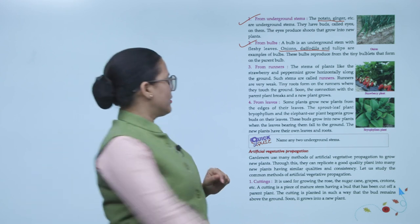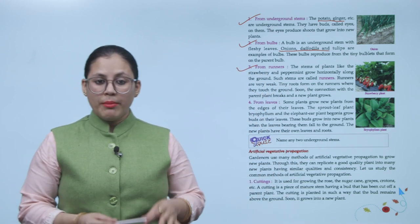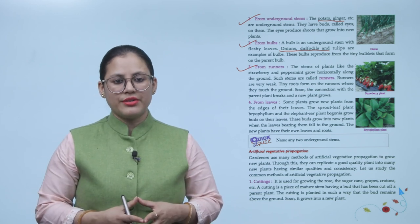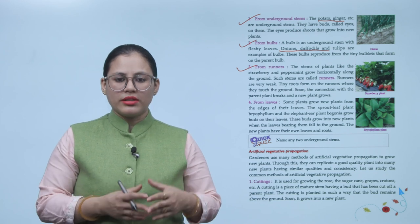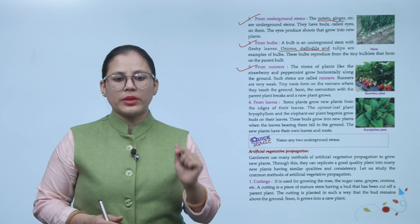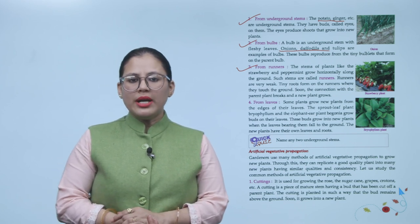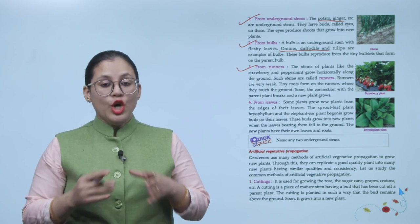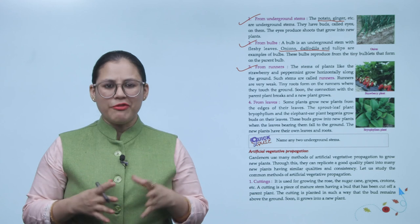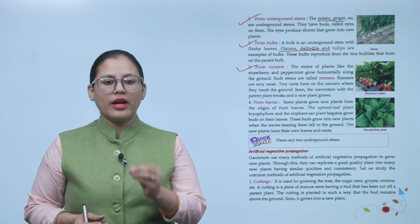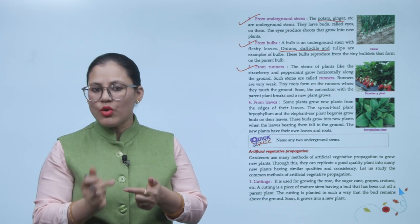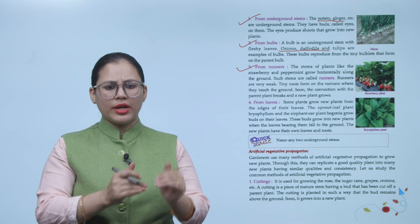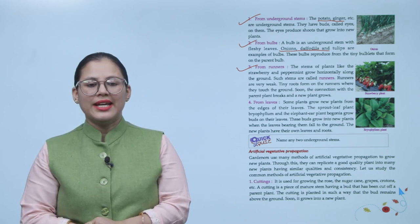From runners. The stems of plants like strawberry and peppermint grow horizontally along the ground. Such stems are called runners. Runners are very weak. Tiny roots form on the runners where they touch the ground. Soon the connection with the parent plant breaks and a new plant grows.